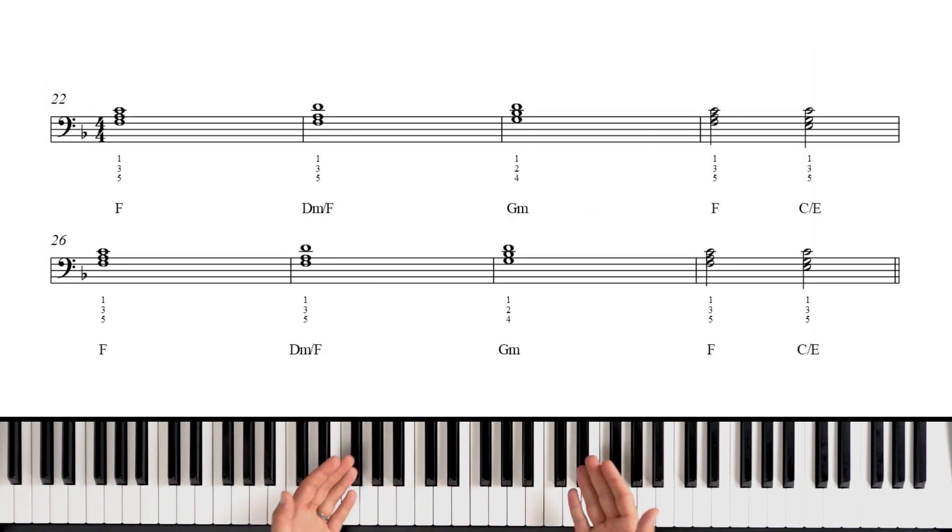Really there are only four chords in this section. There's an F chord, there's a D minor chord, there's a G minor chord, and there's a C chord. Okay, but we have a couple of different inversions. We have some chords repeating, and then we have some different rhythms. A lot of these are whole notes, but we also have some half notes. So let's go ahead and take it from the top. I'll walk you through each chord.